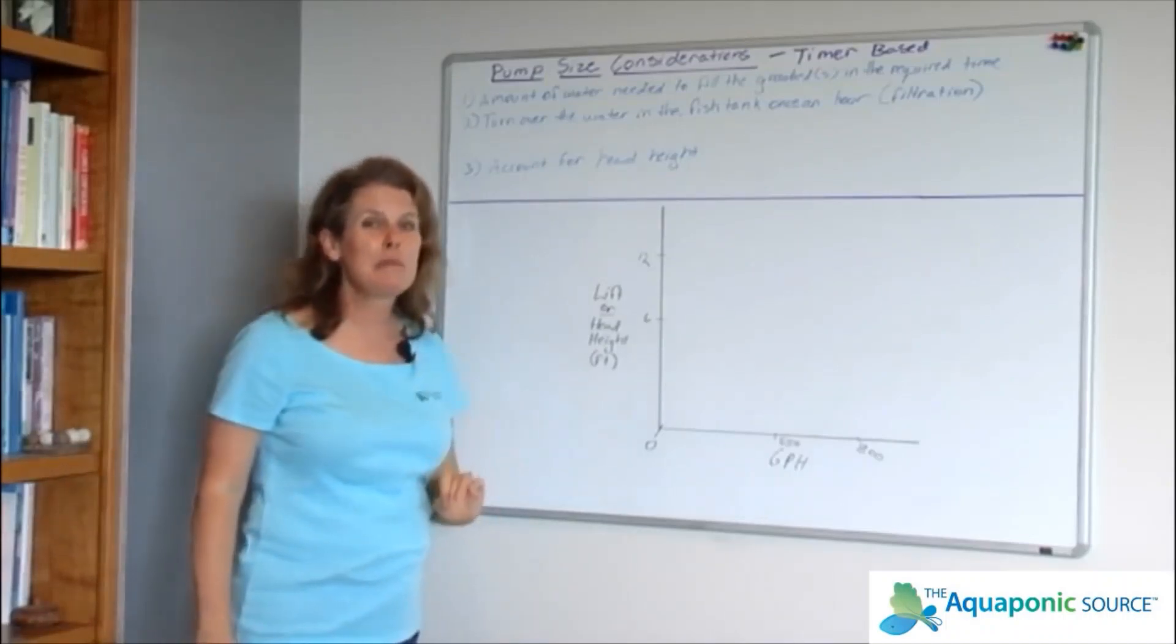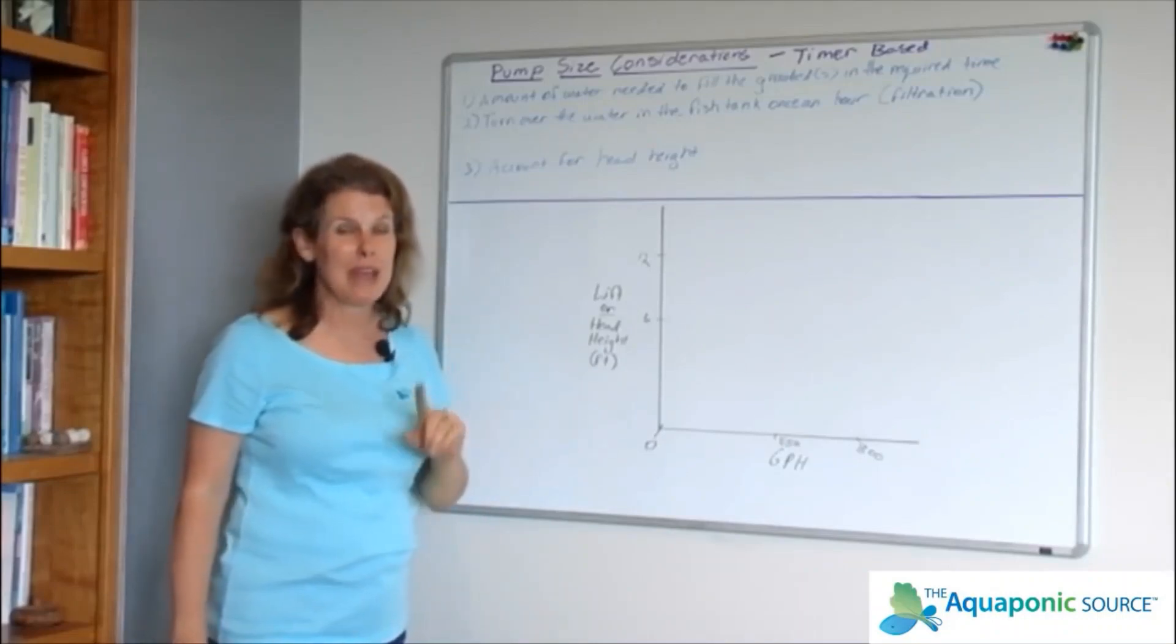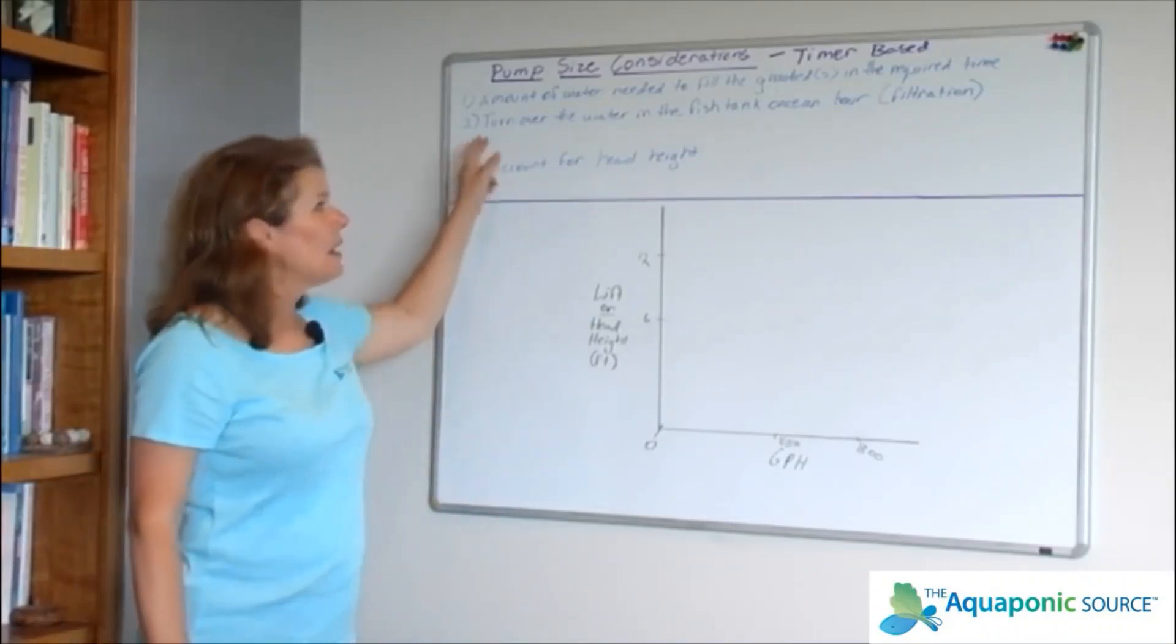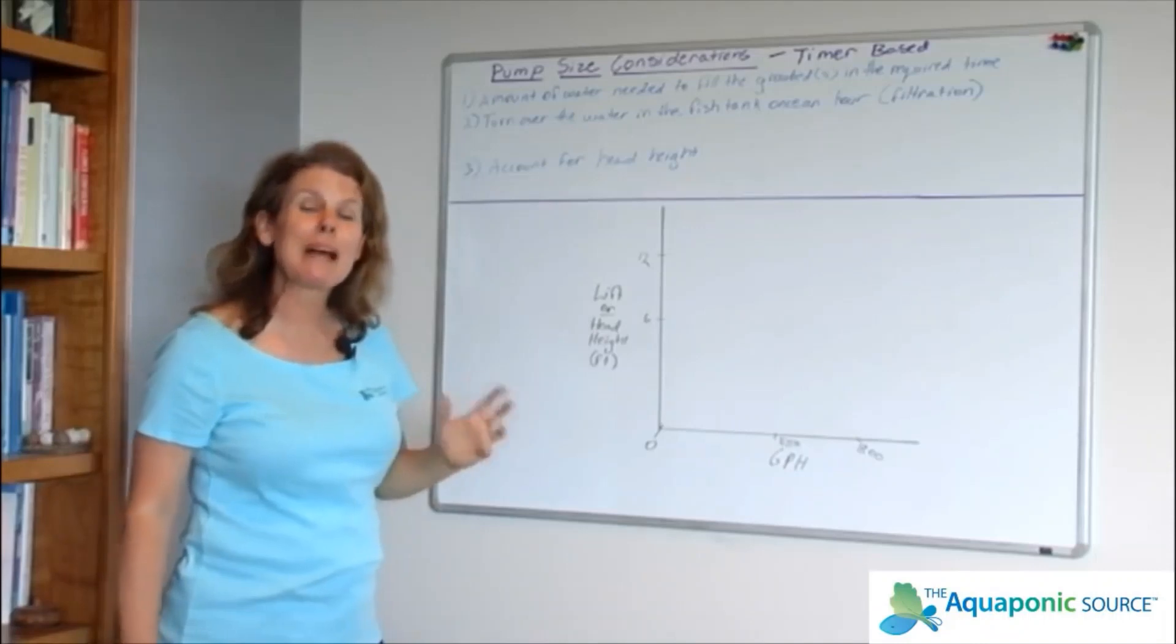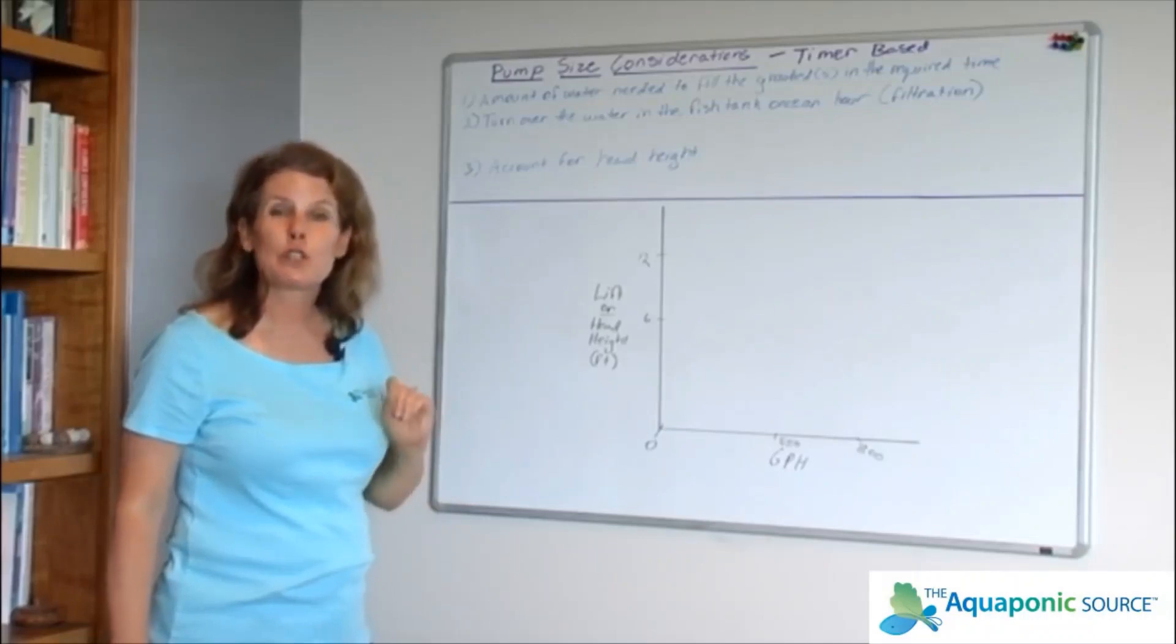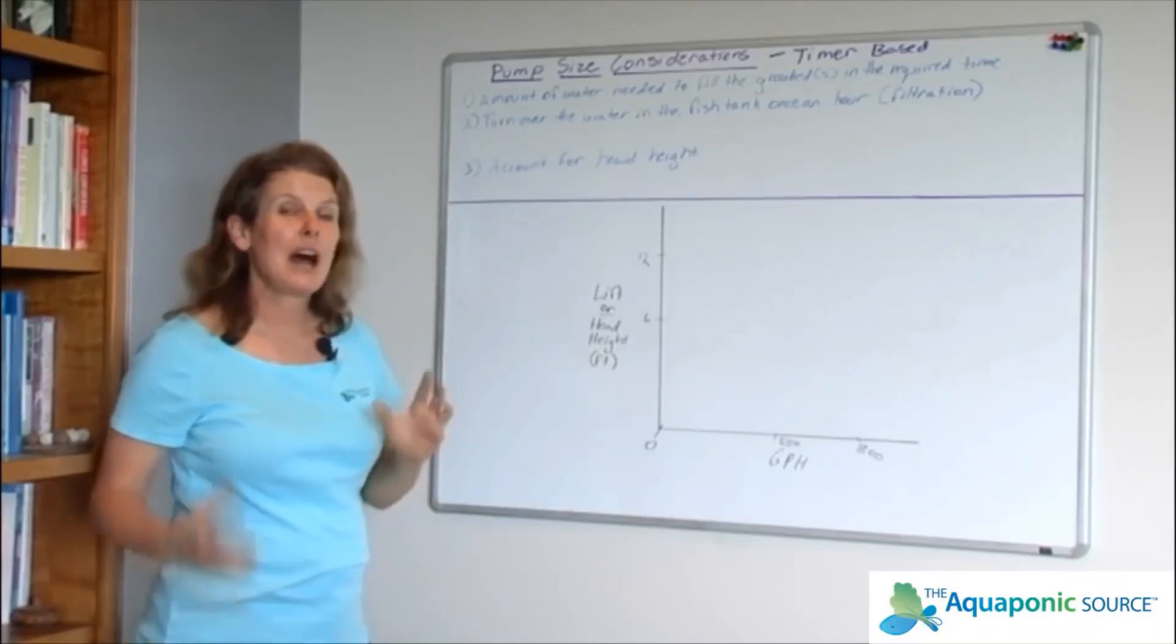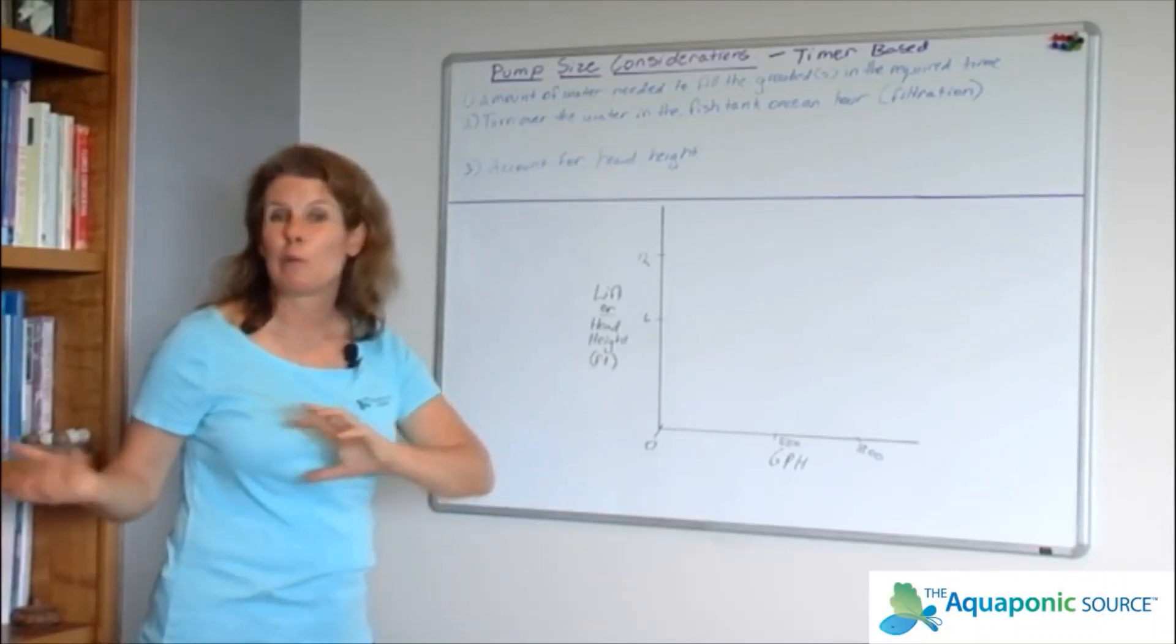Number two is more of a biological issue, and this is around filtration of the fish tank. I want to turn over all the water in that fish tank once an hour, meaning I want to take all that water, run it across the biofilter once every hour at a minimum.